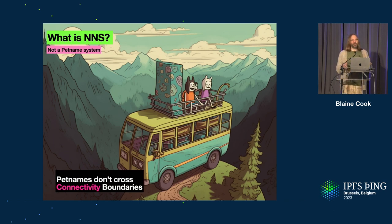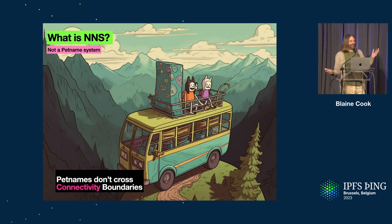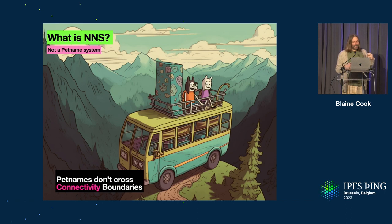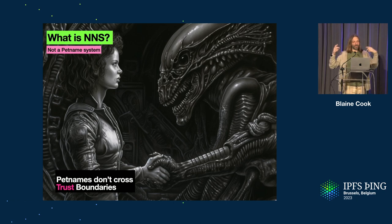NNS is not a pet name system. A lot of the time in the decentralized world people say you can solve this with pet names — and I don't think you can, because pet names don't cross connectivity boundaries. If we're riding a bus and our phones have died and we've just had a great conversation but don't know how to contact each other without a QR code, we need a name we can say and remember. Also, pet names don't cross trust barriers — if I share my pet name database with you, you have no way of trusting whether those names match your expectation.